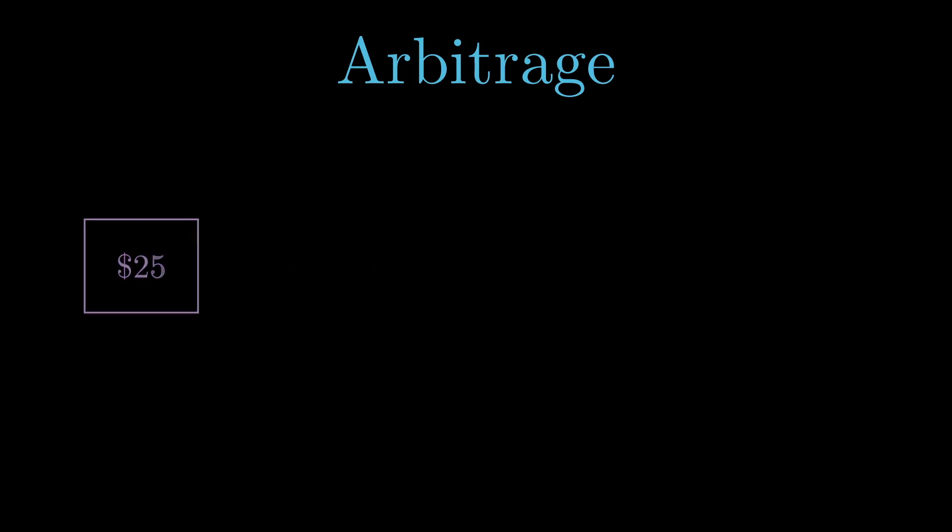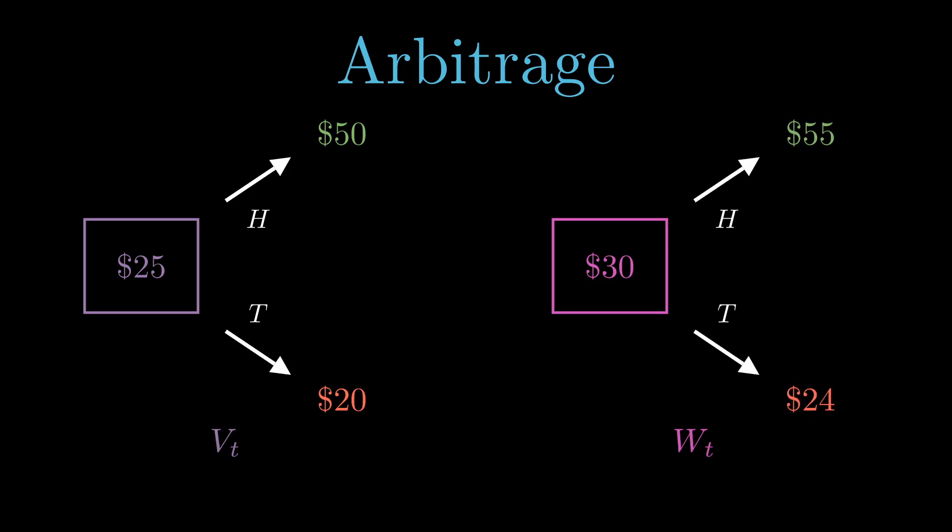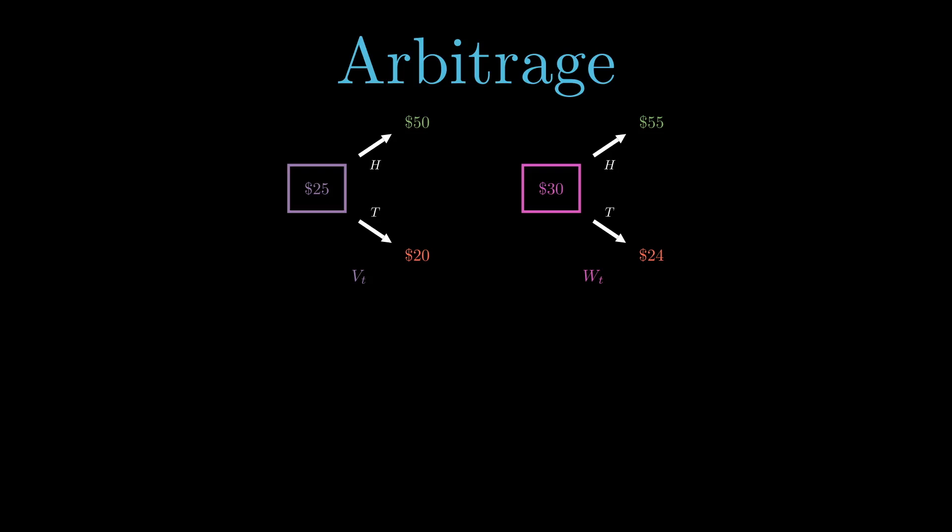Let me give an example. Let's say we have two different assets whose payouts fully depend on a single coin toss. The payouts and the prices are listed here.